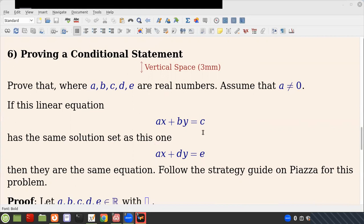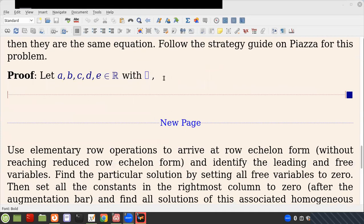And you have to then sort of say, what does it mean to have the same solution set? And you're starting from that. So you're starting from the same solution set and showing that these have to be identical equations. And the strategy guide helps you get started thinking about that and organizing it, so there will only be like three or four sentences here. So it's not like a long thing. But on the other hand, you have to sort of go through and figure out what you're actually doing. Okay? So there's a strategy guide there.